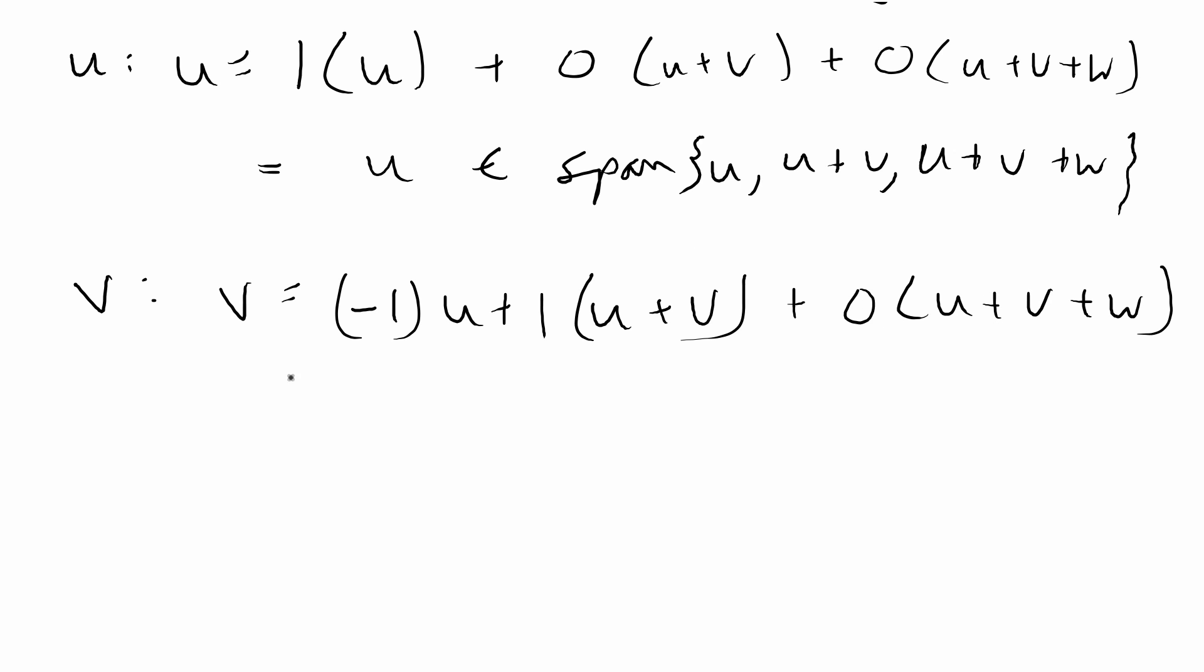The way you get these numbers is basically just thinking about it logically and it's pretty straightforward. That gives us negative u plus u plus v, which is equal to v, so this is also in the span of the vectors.